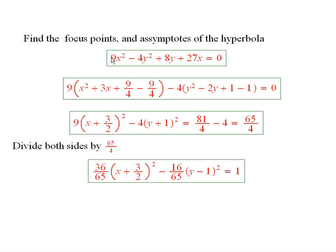So we took the 9x squared and the 27x and factored out a 9. That's x squared plus 3x. Added in half of this squared and subtracted it off.